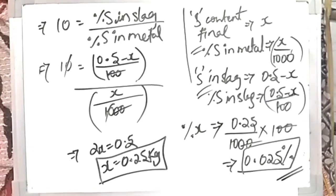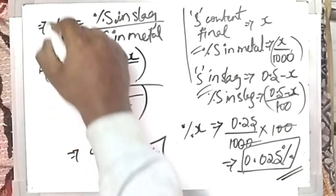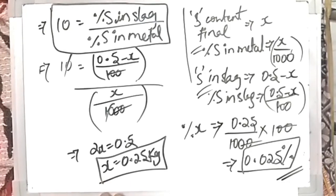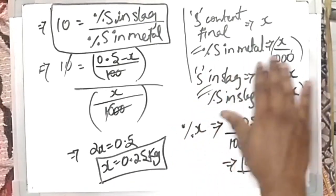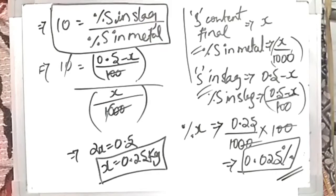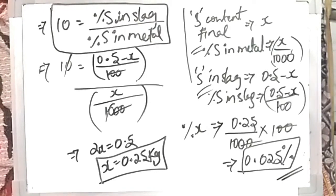So the final sulfur content is 0.025 weight percentage. The approach is: use the partition coefficient formula, assume the final sulfur content x, calculate weight percentages of sulfur in both the metal and the slag, use the ratio to solve for x, then convert to weight percentage. This is an important model from steel making. Thanks for watching — please like and share this video with your GATE aspirants for extraction metallurgy guidance.